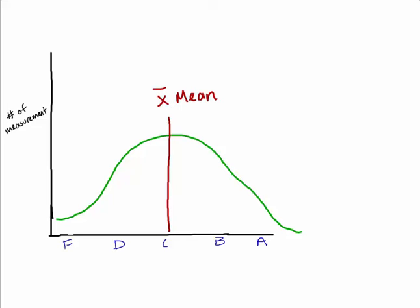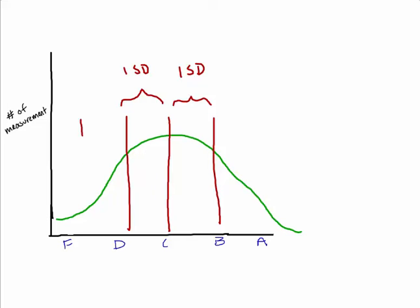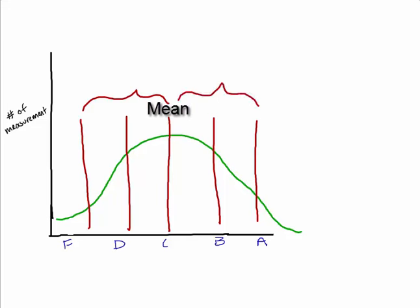Okay, so this symbol, the X with the line above it, is the mean. And then we would expect to find about 68% would fall within what we call one standard deviation from the mean. One standard deviation below or one standard deviation above the mean.